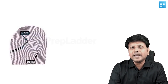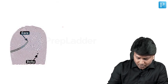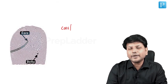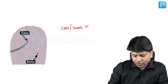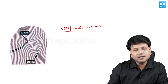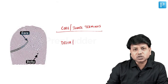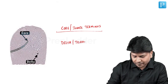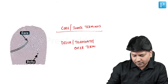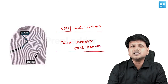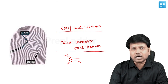Important terminologies in fingerprint patterns: the first is 'core,' which is the central part of the pattern where ridges converge — also called the inner terminus. The second is 'delta,' also called tri-radiate or outer terminus, where ridges start diverging from each other. The point where two or three ridges diverge is called the delta.